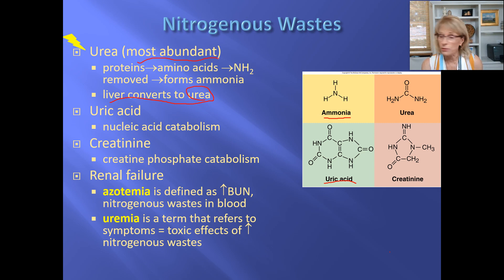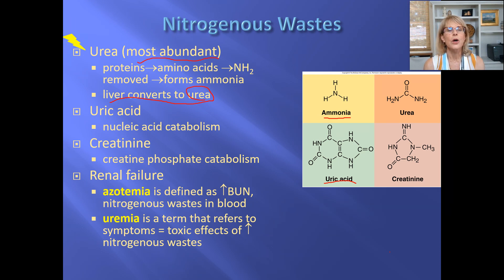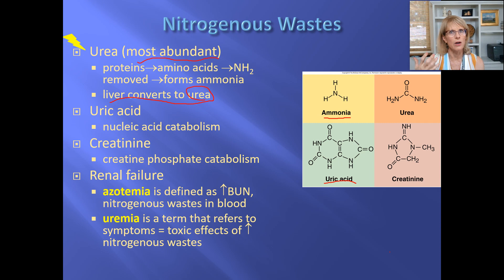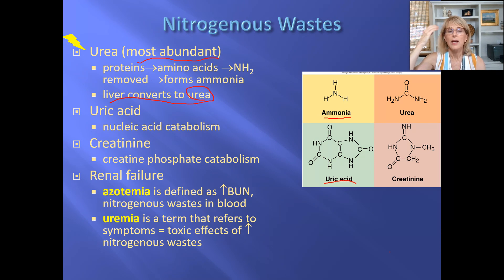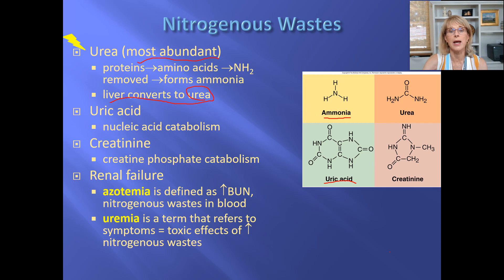Probably every time in your life you've gotten a blood test, they measured how much urea and creatinine was in your blood. When ammonia builds up in the bloodstream it creates problems thinking, which can look like someone's gotten demented, maybe on drugs, or mentally ill. It's the liver's job to convert ammonia to urea, so if a patient's liver is not working well, all the ammonia the body makes in one day can't be converted, and ammonia will build up in the bloodstream.